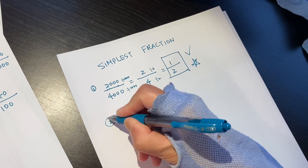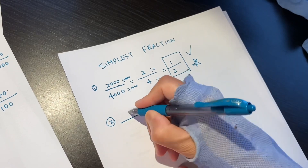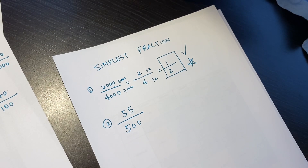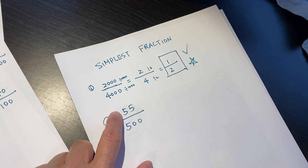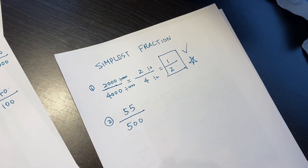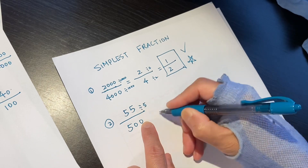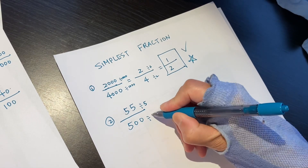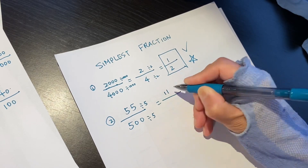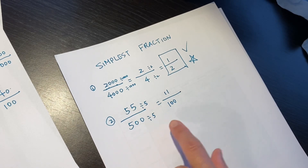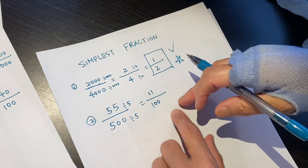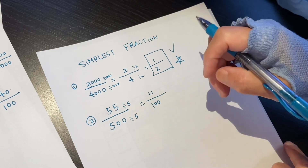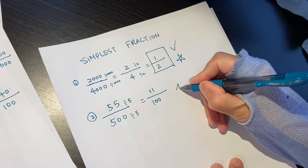Another one: 55 over 500. When we see this, 55 is a multiple of 5 and 11. So how about we divide by 5? If we divide by 5 on top, on the bottom we divide by exactly the same number — 5. It becomes 11 over 100. Can we find any number that divides both 11 and 100? No, we cannot find one. So this is the simplest fraction.